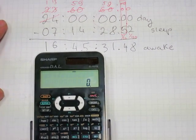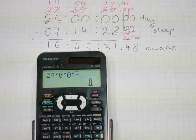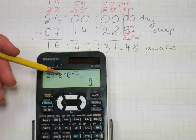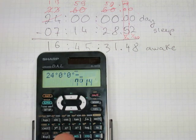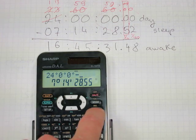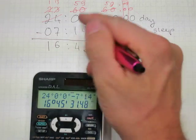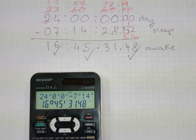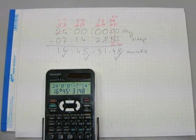Let's do the calculator version. Enter 24, then the DMS button — the calculator fills in zeros and interprets it as 24 hours, 0 minutes, 0 seconds. Minus 7, DMS, 14, DMS, 28.52, equals: 16 hours ✓, 45 minutes ✓, 31.48 seconds ✓. My calculation is correct. That's how to do these calculations on a calculator. You have 16 hours and 45 minutes — let's get to work.